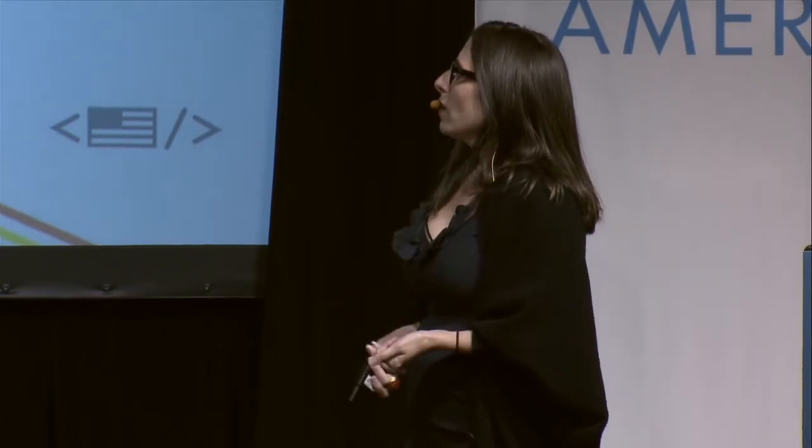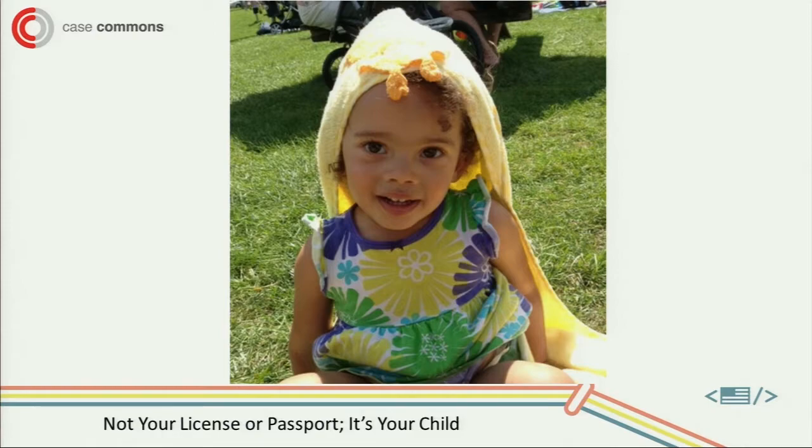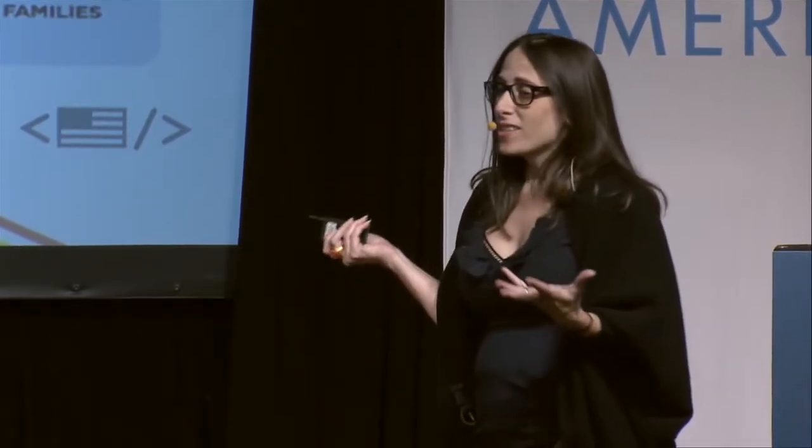This is a frustrating experience. But the reality is it's not your license or your passport — in this case, it's your child. You're standing in line at different agencies, going through this loop again and again, explaining your story so that your child isn't removed from your care, or because your child has been removed and you're trying to be reunited. You have a set of tasks to do with these different social service agencies.